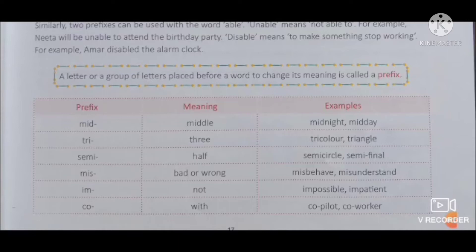The next prefix is 'im' - its meaning is 'not.' Like impossible - possible ke aage im laga diya, so impossible means jo possible nahin hai. Another example is impatient. Then the prefix 'co' means 'with' - kisi ke saath. Like co-pilot - when there are two pilots, one is the main pilot and the other is with him, that is the co-pilot. Co-worker means koi worker ke saath doosra worker kaam kar raha hai. These prefixes will help you make new words.